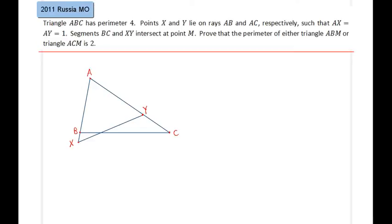Hello everyone, in this lecture we are going over 2011 Russia Math Olympiad. So triangle ABC has perimeter 4, points X and Y lie on rays AB and AC, as you can see here, point X and Y.